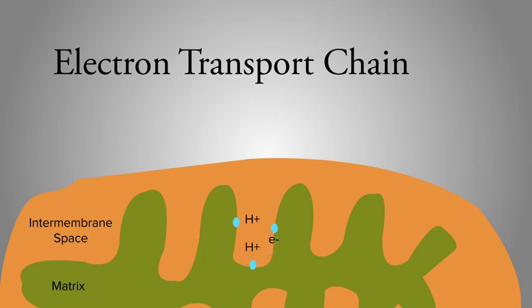At the end of the electron transport chain, electrons are donated to oxygen, and as a result, water is formed.